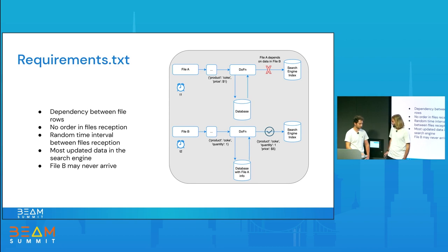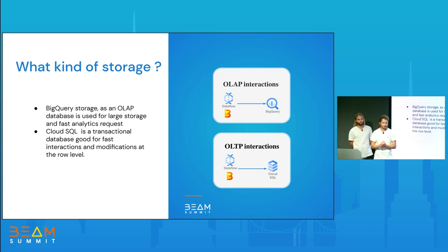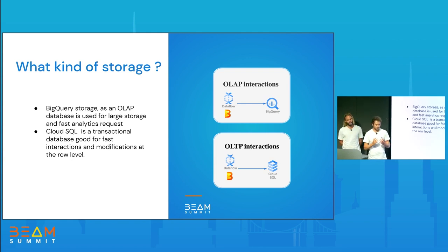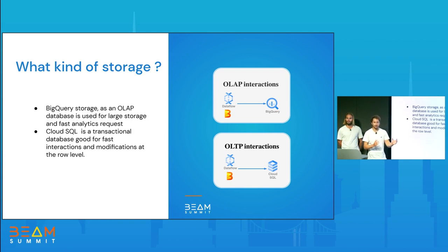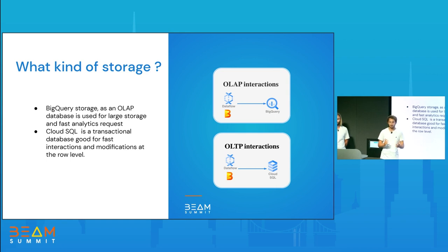Our first idea, since we have an enrichment data problem, was to use a stateful DoFn with a timer. It didn't work for two reasons: first, the enrichment data is too large to fit in memory, so we cannot use the state feature of DoFn. Moreover, the time interval between dependent file receptions is random, and in some cases some files may never arrive.